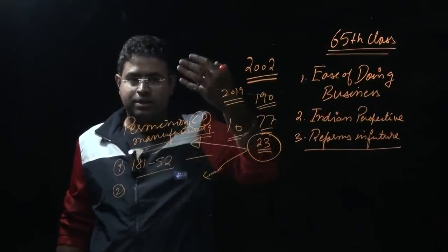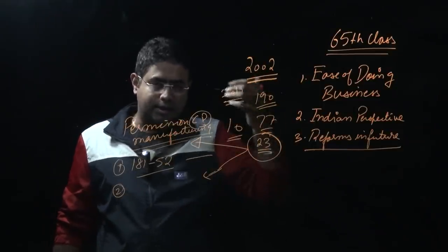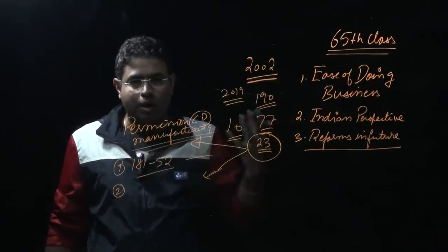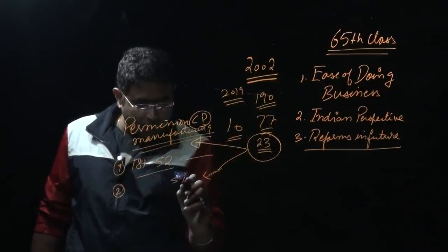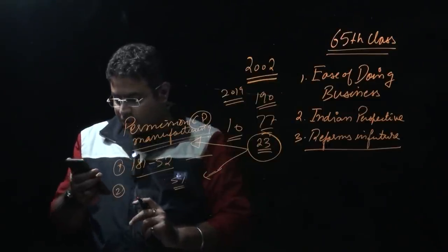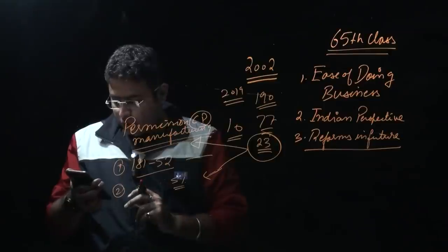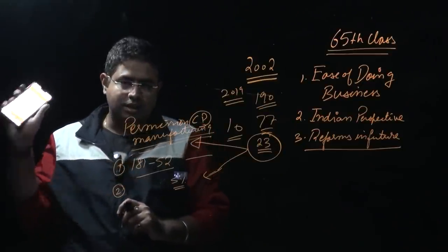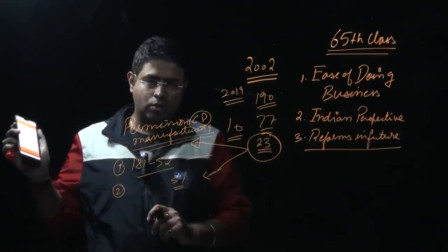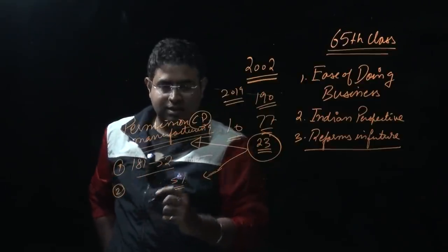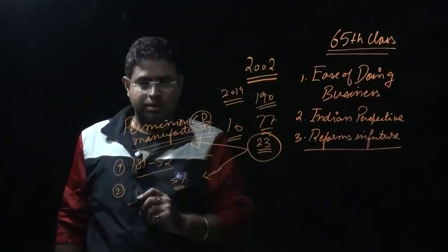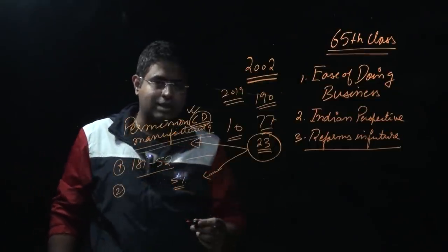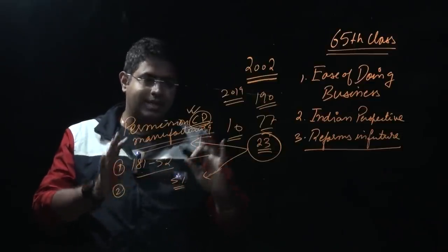Another important reform introduced by Delhi government is the single window clearance system. In Bombay, they have introduced an online building permit approval system. These are the two important reforms that have taken place with respect to conducting trade in India. Construction permits have become easy, and trade across borders has improved. These are the two things because of which India's rank has substantially improved.